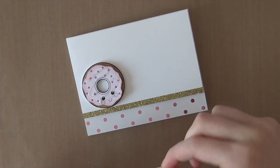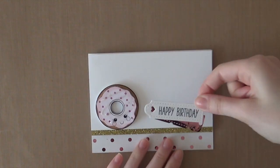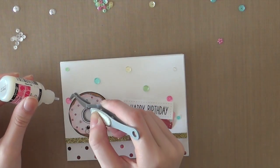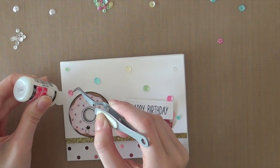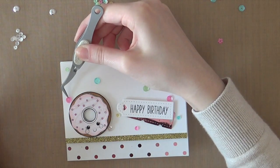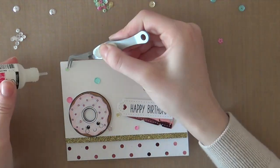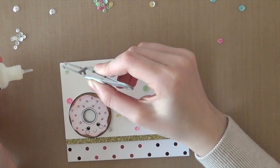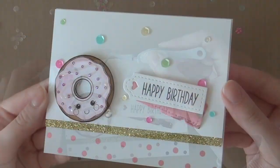I used some foam adhesive to adhere this label onto my card, just like that. And then last but not least, I'm going to finish off this card using some Pretty Pink Posh sequins. I used the sequins from the Springtime mix. And then I also added some Sparkling Clear sequins since those are my favorite Pretty Pink Posh sequins.